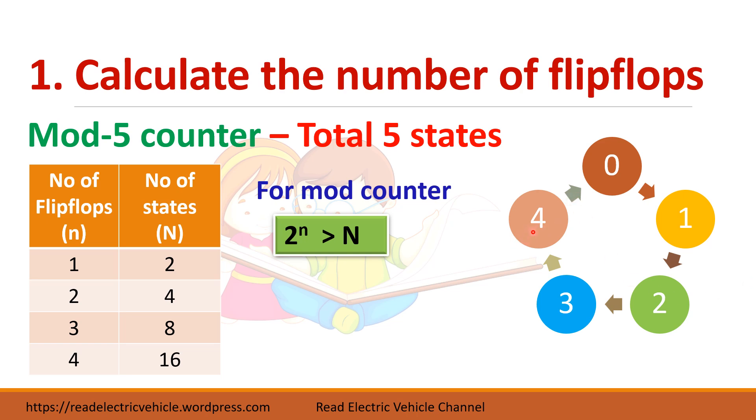Otherwise you can directly find it. What is the last state of this counter? It is 1, 0, 0. That is 4 means 1, 0, 0. It means that it needs 3 bit. 3 bit means you need 3 flip-flops for designing this counter.